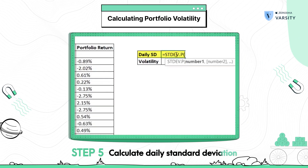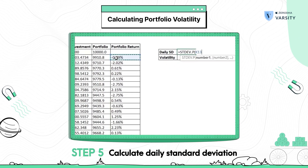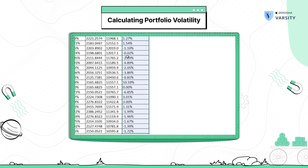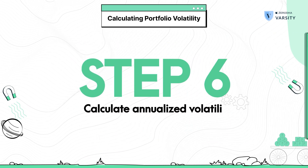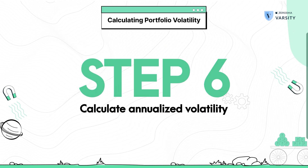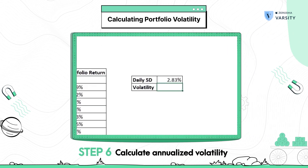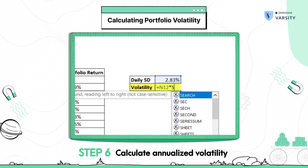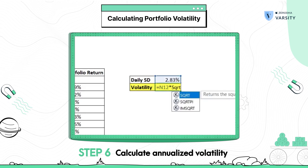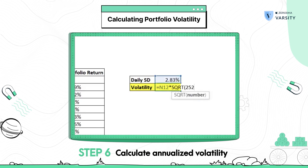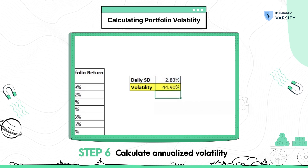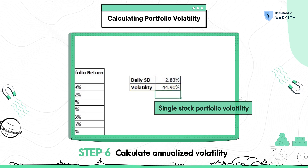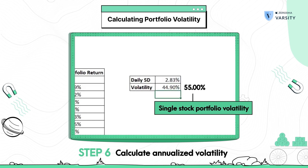With the addition of another stock, the risk has greatly reduced. The two-stock portfolio now has a portfolio volatility of 44%, as opposed to the single stock portfolio's volatility of 55%.